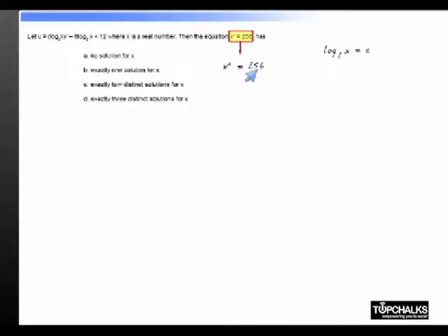If I take log on both sides to the base 2, I will get u log of x to the base 2 is equal to 8, or we will find that the value u can be written as 8 by A.